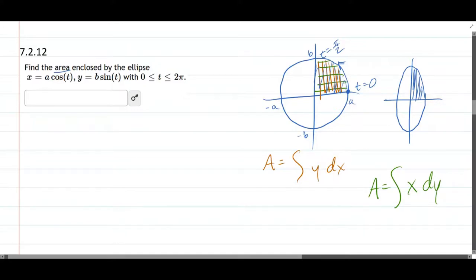Now, the previous problem, I did a y dx integral the regular way. Let's do an x dy this time. So I already have x is a cos t, y is b sin t. So dy is y prime dt, and y prime is b cos t dt. That's dy.